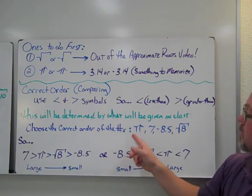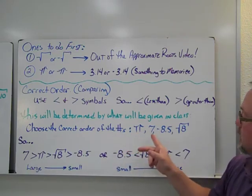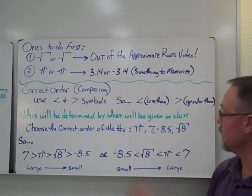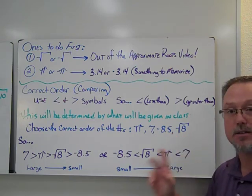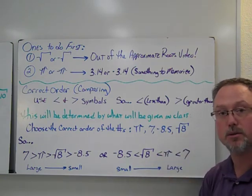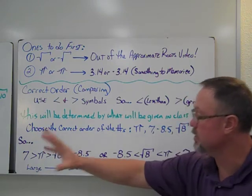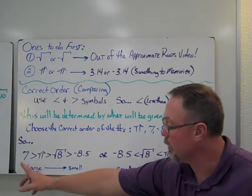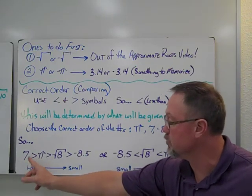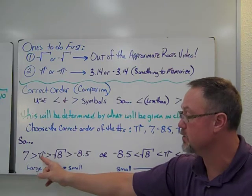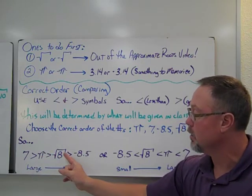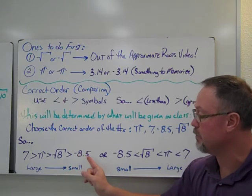So choose the correct order of the numbers. Pi, 7, negative 8.5, and the square root of 8. So again, you have to figure out what the square root of 8 is. Again, figuring out the two numbers that it goes in between. So if I were to say large to small or greater to least, I would start out with my 7 is greater than pi. Pi, which is 3.14, is greater than the square root of 8, which is greater than negative 8.5.